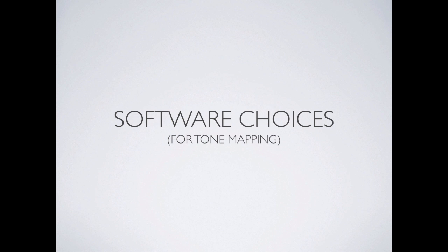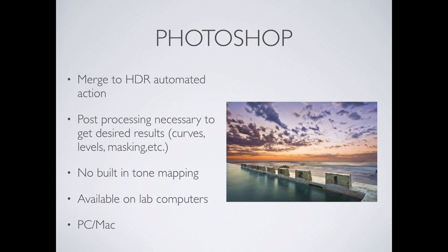We have two primary software choices. The first is Photoshop, where we're going to take a fusion of three images — one underexposed to capture shadow information, one correctly exposed, and one overexposed. We're going to combine those together using the automated Photoshop action called Merge to HDR. Then we'll do some post-processing and use masking. Unfortunately there's no automated option for the tone mapping process, so we'll have to do it manually, which means you learn a lot in the process.